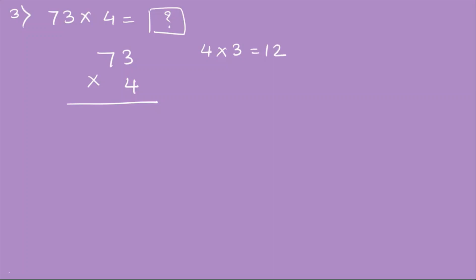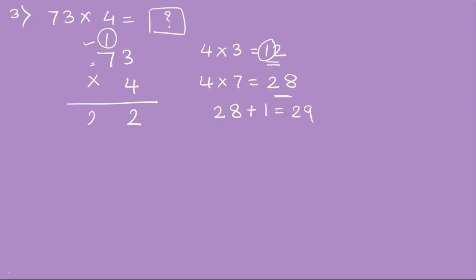First I will start with 4 times 3. 4 times 3 equals 12. This is the units place so I will just write 2 here and carry the 1 in the tens place. Now 4 times 7 equals 28. We have to add the carried 1 to 28, so 28 plus 1 equals 29. We write 29, giving us 73 times 4 equals 292.